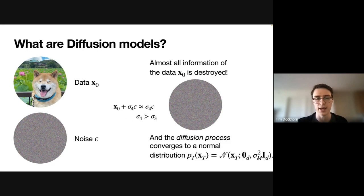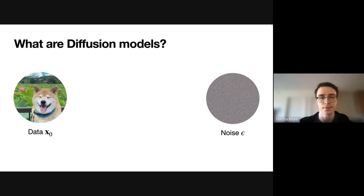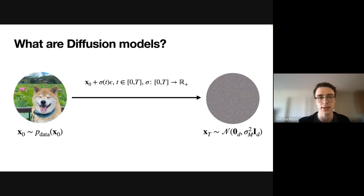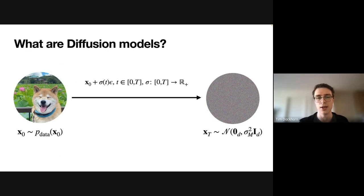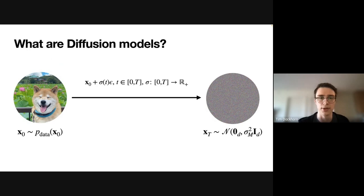So we may approximate x₀ plus sigma₄ epsilon by just sigma₄ epsilon. What this really means is that the diffusion process converges to a normal distribution — here a normal distribution with variance sigma_m squared. I indicate that we are at the final step of the diffusion by this time parameter capital T. Now I did this for four discrete values, but we may also do this over continuous time.